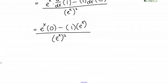e to the x times 0 is just 0 minus 1 times e to the x. So I end up with negative e to the x over e to the x squared.